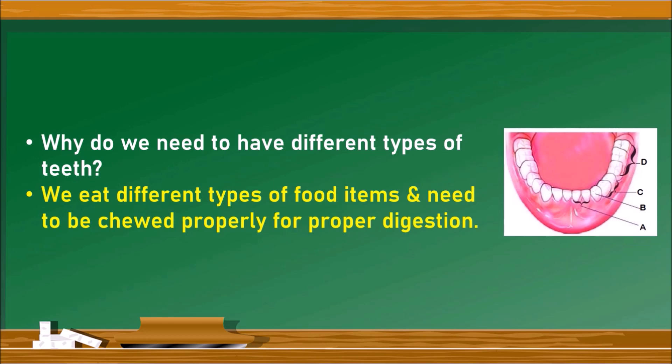So we eat different types of food items and these food need to be chewed properly. It has to be cut, it has to be torn, it has to be ground, it has to be chewed properly for their proper digestion as per the requirement of our digestive system. So we need to have different types of teeth.